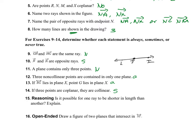Is it possible for a ray to be shorter than another? No, it's not possible. Because every ray starts at a point and extends infinitely to the other side. So no matter how I draw it smaller or larger, rays are infinite — they continue forever.